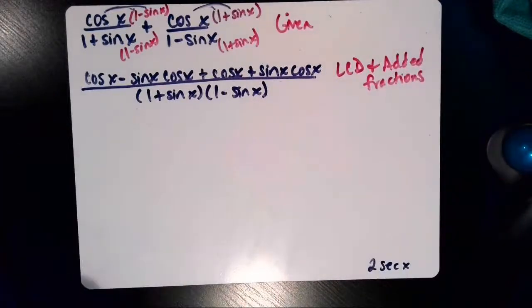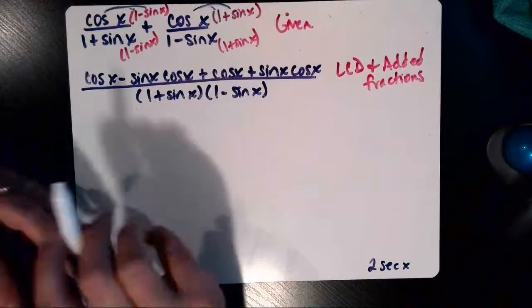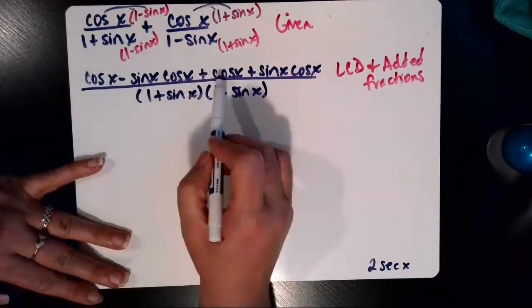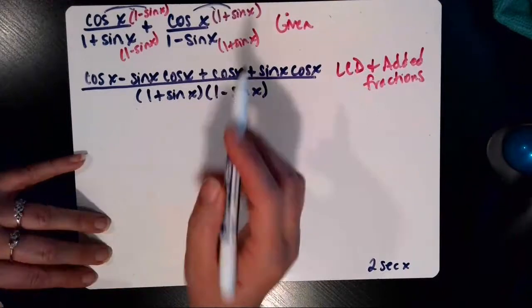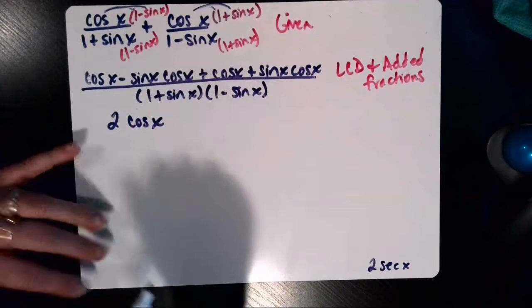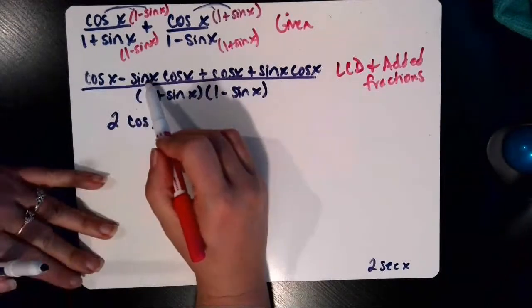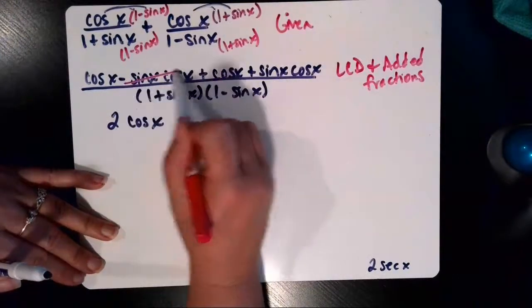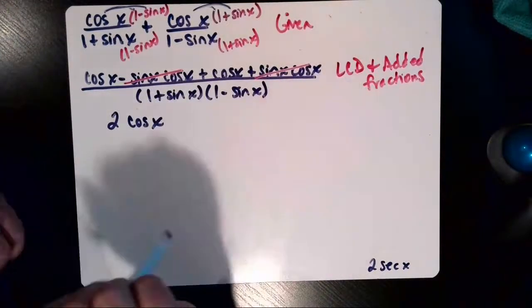So now in step number three, let's do some simplifying. So here we've got a cosine of x plus another cosine of x. That's 2 cosine x when we combine like terms. And then negative sine x cosine x and a positive sine x cosine x. Those cancel each other out to equal 0.